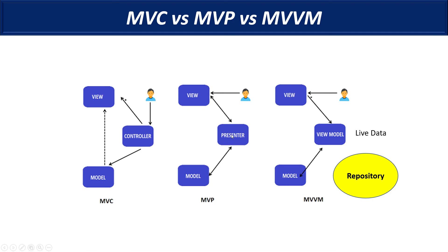For MVVM, the key addition is LiveData coming from the Repository — which handles the model or API services. The ViewModel gets all the information from the Repository and holds the LiveData. When the view needs LiveData, it's passed through. The view doesn't need to know about the model or ViewModel internals — the ViewModel just binds the data to the UI components. So these are the main things to understand about MVC, MVP, and MVVM — three architectures that are different in many cases but look similar in others.